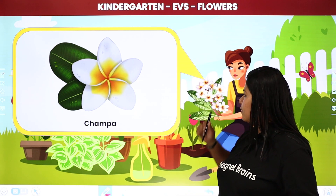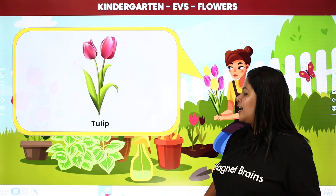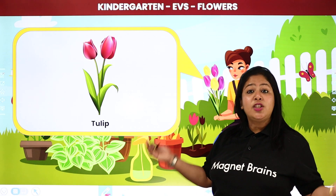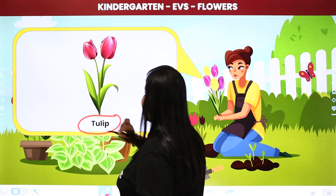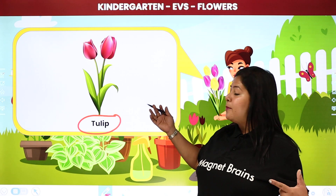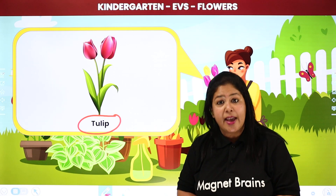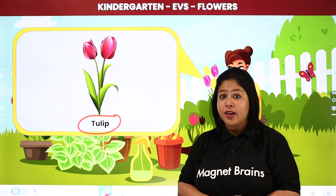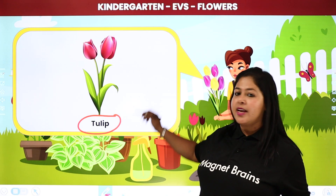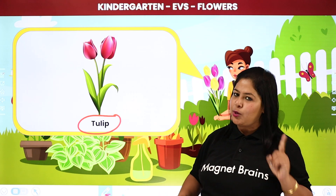Now let's see the next flower. The next flower of Lisa's garden — tell me, this is which flower student? Tulip. T-U-L-I-P. Repeat after me: tulip. So student, tulip jo hai yeh pink color ka hai, but different different colors ki bhi hota hai — white bhi hota hai, yellow bhi hota hai. So this is tulip — T-U-L-I-P. Remember: tulip.